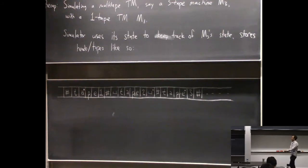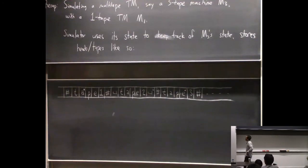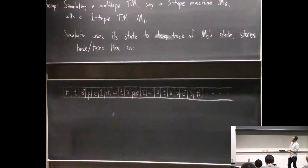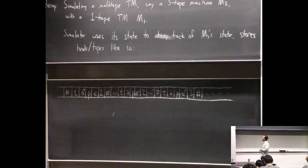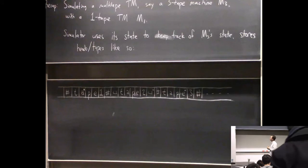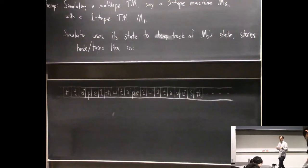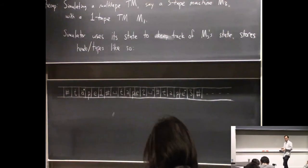Good morning. Hopefully my voice will be a little bit better today. So today we're going to talk some more about time complexity. We'll see our first few complexity classes of the course, of which there will be many. Talk about universal Turing machines, make an intro to our first main theorem in the class, which is called the Time Hierarchy Theorem. We'll prove it next time. But before we get fully into that, I want to recap something we were talking about at the end of the last class, which I didn't fully get time to explain properly.